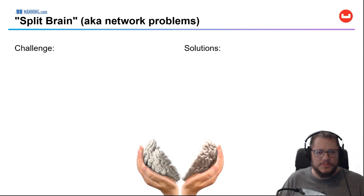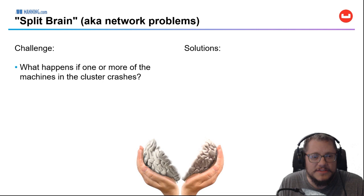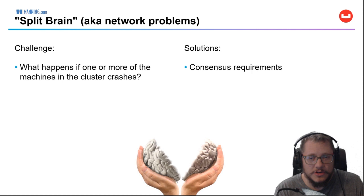The first is a class of problems called split brain, which basically means network problems — crashes and consensus. What happens if one or more machines on the cluster crashes? The consensus requirements around durability come into play: what's the acceptable number of nodes for operations and replicas to be persisted to? Is one good enough? Is two? Is the majority? Is memory good enough, or do I need disk?